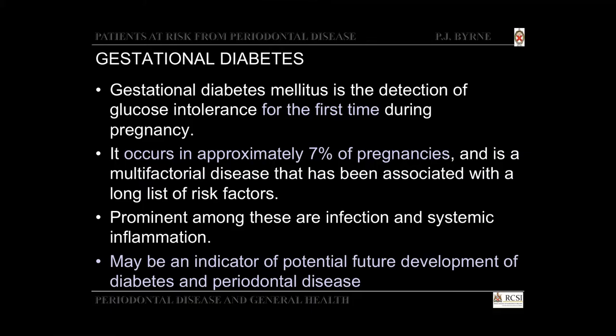Gestational diabetes is another area of interest — it occurs in about 7 percent of pregnancies and is a multifactorial disease associated with a long list of risk factors, prominent among which are infection and systemic inflammation. It may also be an indicator of future development of diabetes and periodontal disease.